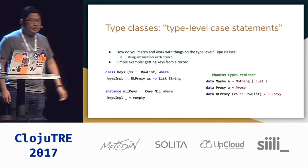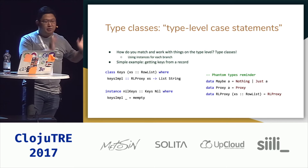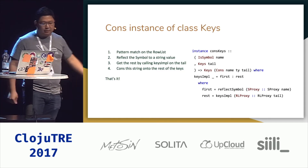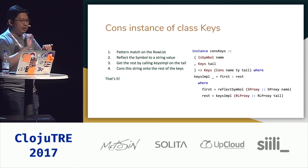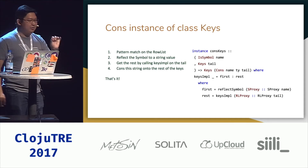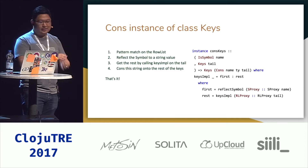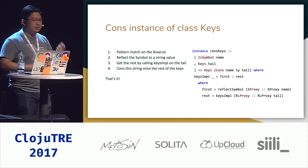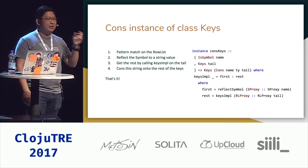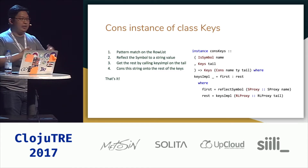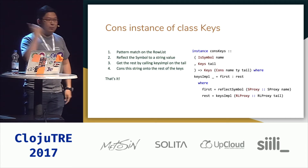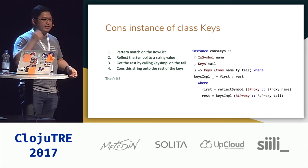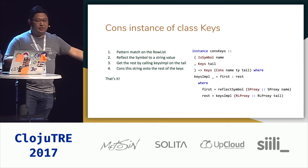We have the Nil instance for the Keys class, which just returns the monoid empty — the identity of a list, which is empty. For the Cons instance, we know from before that it's going to be the symbol name and the value. When we're getting the keys we don't care about the value, but we do need to confirm the symbol is actually a symbol using the IsSymbol constraint. We also set the constraint that the rest of the list has instances for Keys, so we can get keys from the rest. The implementation takes the first key, cons'd to the rest, where first is the symbol reflected back to value level, and rest is the remaining row list turned into a list of strings.